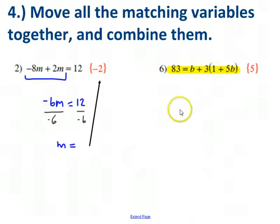I wouldn't recommend that you do that. Instead, I would recommend that you go ahead and distribute that three. It's going to end up being a lot clearer. So three times one is three. Three times five b is 15b.